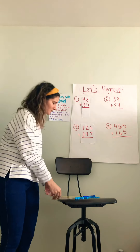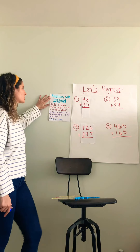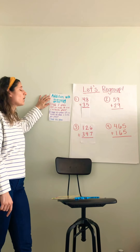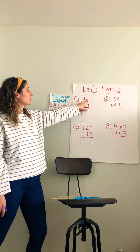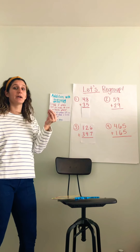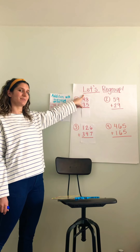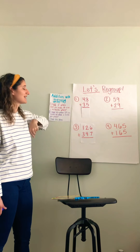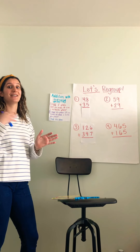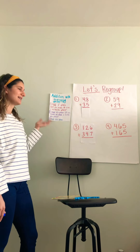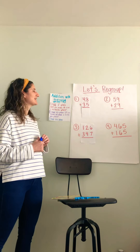Before we do the story, let's review how we regroup when we're adding. The first thing you want to do is always start in your ones place — you always add your ones place first. That way, if when you're adding your ones place that number is greater than 10, it means we need to move our 10 into our tens place before we can add our tens place. Then the second step is to add up all of the numbers in the tens place. If you have a number that needs to be moved to the hundreds place, we move it over there. And then our last step is to add the hundreds place.